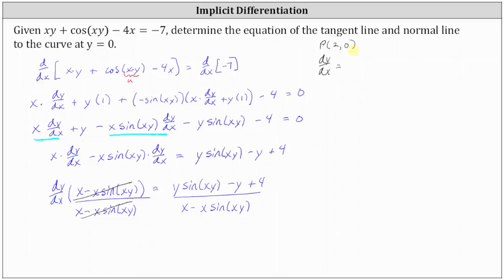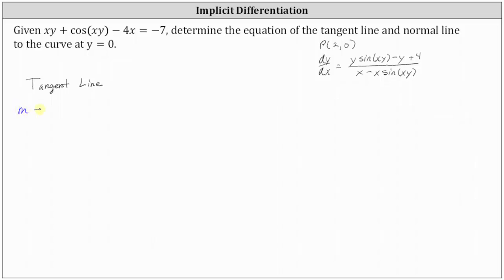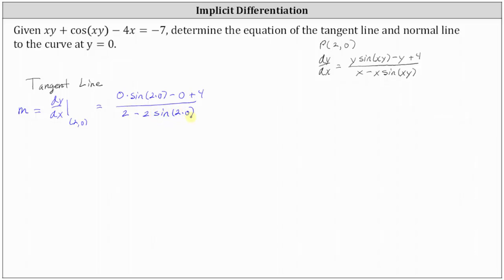Let's record this above. Now let's work on determining the equation of the tangent line. The slope of the tangent line equals dy/dx at the point two comma zero, so we substitute two for x and zero for y into the derivative. This gives us zero times sine of two times zero, minus zero plus four in the numerator, divided by two minus two times sine of two times zero in the denominator. Simplifying: the numerator is four; in the denominator, sine zero is zero, so we get two. Four divided by two is two, so the slope of the tangent line is two.